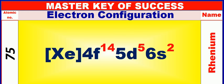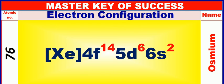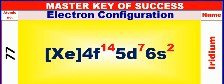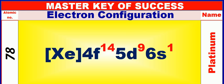Atomic number is 75 and name of atom is Rhenium. Atomic number is 76 and name of atom is Cosmium. Atomic number is 77 and name of atom is Iridium. Atomic number is 78 and name of atom is Platinum.